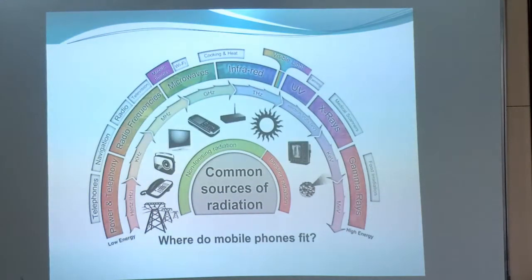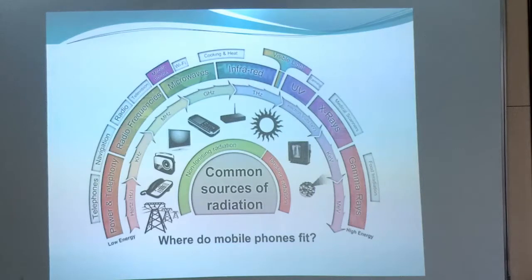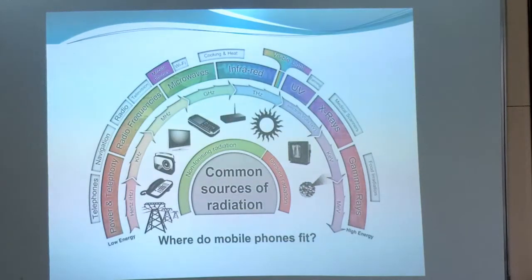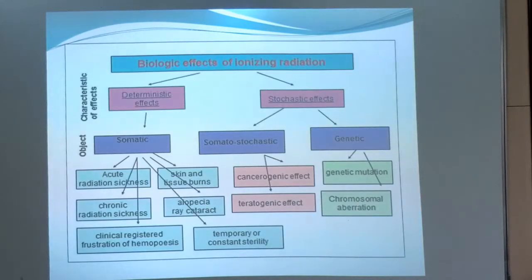The next physical hazard is radiation. Common sources include telephones, navigation equipment, radio, television, Wi-Fi equipment, microwaves, infrared radiation from cooking and heat, visible light, ultraviolet light, and more seriously, x-rays during medical scanning and gamma rays. The biological effects of ionizing radiation are somatic, somatostochastic, and genetic.